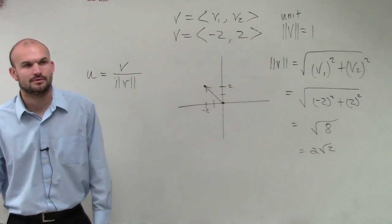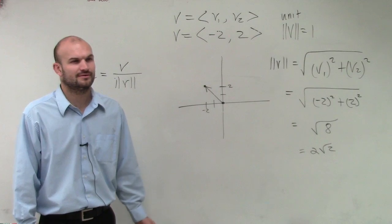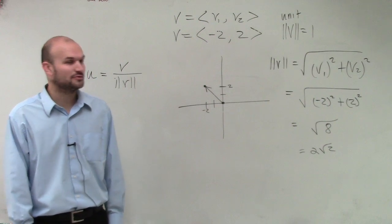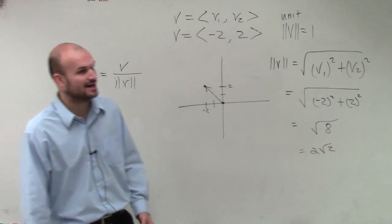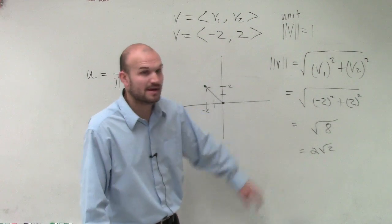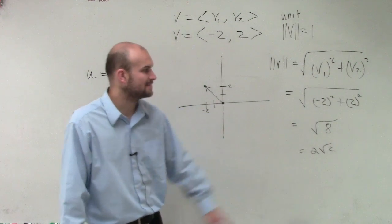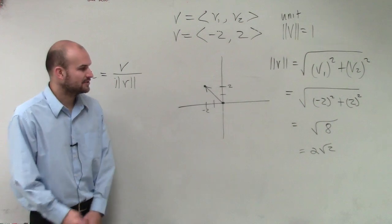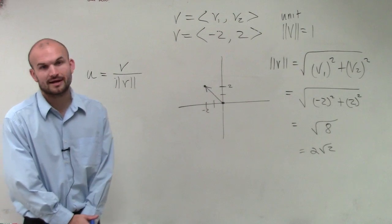You have to simplify. 2 radical 2, yes. You have to keep on simplifying. If you remember taking your test, I did mark you down if you didn't simplify. You guys got to make sure you simplify this. So now we know the magnitude is going to be 2 radical 2.